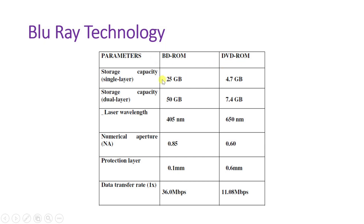Looking at Blu-ray ROM versus DVD ROM: data transfer rate is far greater in Blu-ray, at about 36 Mbps, while DVD data transfer rate is just 11.08 Mbps. Blu-ray disc ROM therefore has a data transfer rate approximately three times that of DVD ROM.